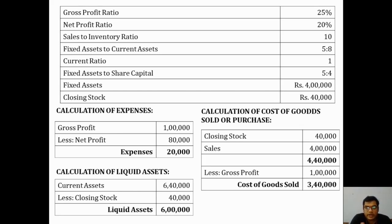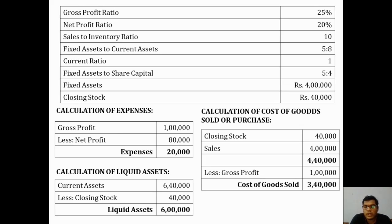Gross profit is 1 lakh and net profit is 80,000, so expenses incurred equal 20,000 — this is the difference between gross profit and net profit. This 20,000 will be transferred to the debit side of the profit and loss account. For cost of goods sold: closing stock plus sales equals 4,40,000. Subtracting gross profit of 1 lakh gives cost of goods sold of 3,40,000, which is transferred to the debit side of the trading account.